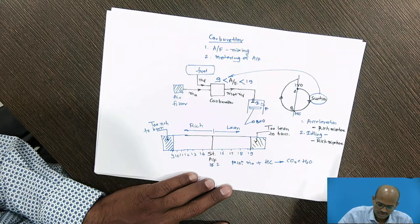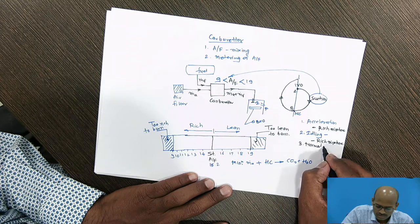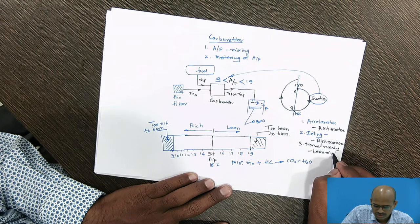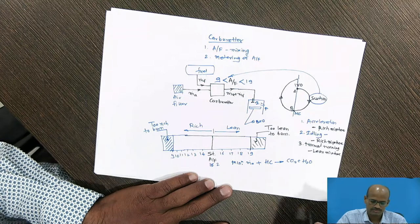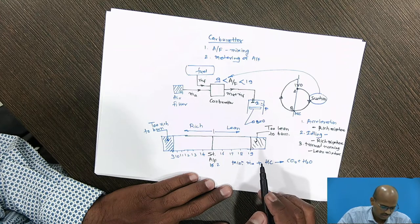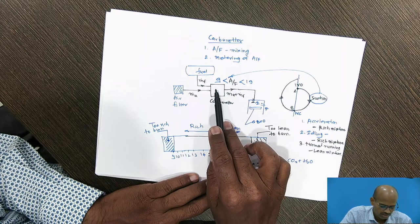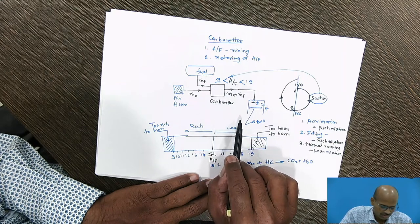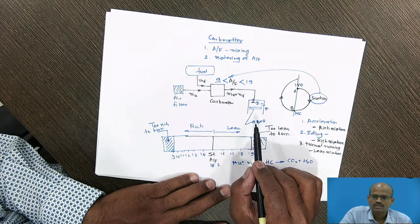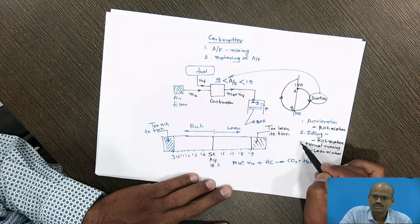The next stage of the engine is normal running. During normal running, the carburetor should supply the lean mixture. These are the different air-fuel ratios and the working of the carburetor for different engine stages, so that the engine is always in running condition and satisfies the driver's requirements.